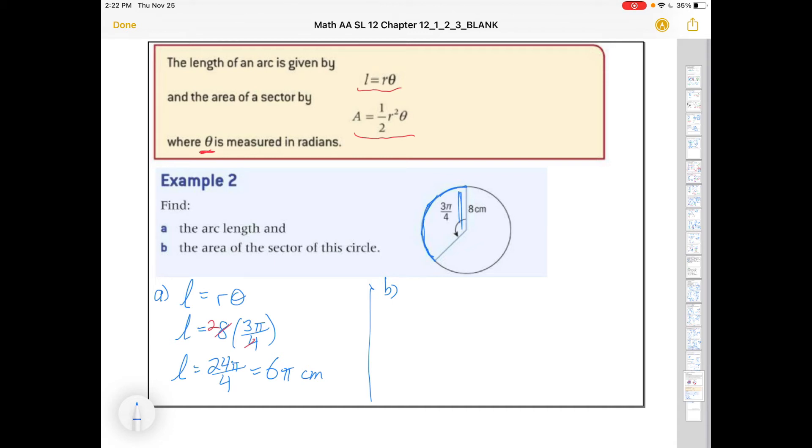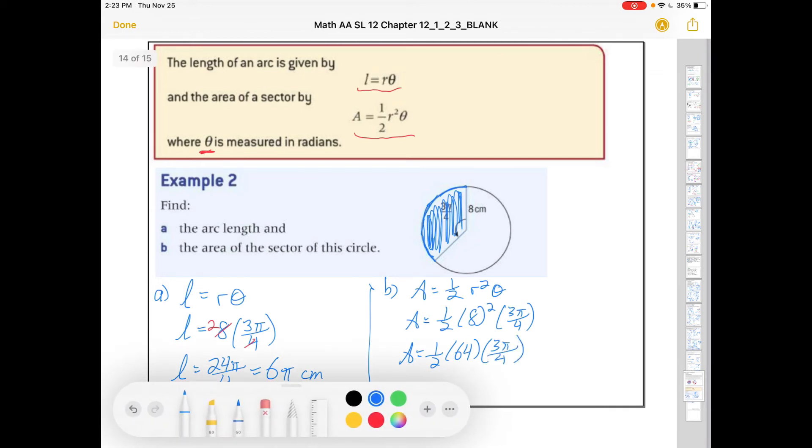The area of this sector: how much area does this cover? We've got area is one half r squared theta. So that's going to be one half by 8 squared by 3 pi over 4. That's one half times 64 times 3 pi over 4. One half times 64 is 32, 32 divided by 4 is 8, so in the end we're going to get 24 pi. Since it's an area, that's 24 pi centimeters squared. Arc length is a length, sector area is an area, so we use corresponding units.